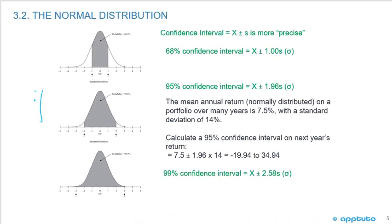Again, just to give a quick example of that confidence interval, it's so easy to understand with just a quick example. So the mean annual return, normally distributed, on a portfolio over many years is 7.5% and you have a standard deviation of 14%. So when we look at confidence intervals...